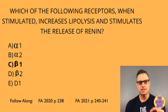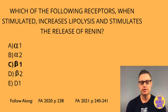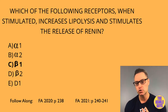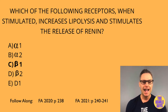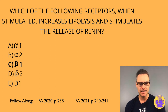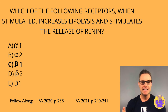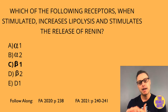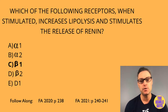Alpha-1 is mediated by GQ and results in vascular smooth muscle contraction, mydriasis via increased pupillary dilator muscle contraction, and increased intestinal and bladder sphincter muscle contraction. Alpha-2 is mediated by GI and results in decreased sympathetic outflow, decreased insulin release, decreased lipolysis, increased platelet aggregation, and decreased aqueous humor production.